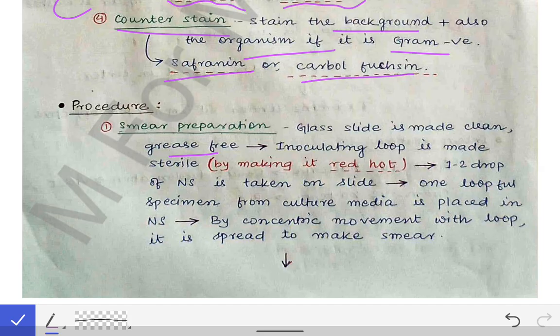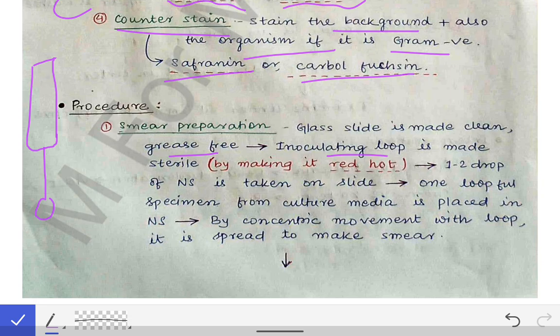After heating, we wipe the slide with a cotton cloth to make it a clean glass slide. Then we take an inoculating loop — it has a handle with a wire that is round at the end. This is called the inoculation loop.